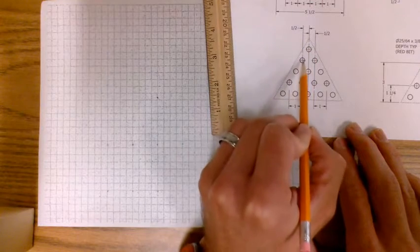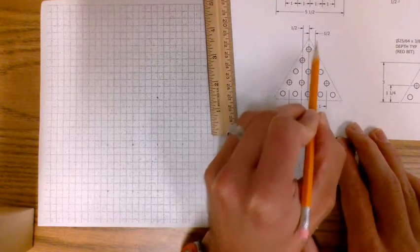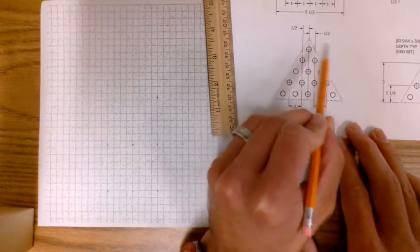You'll notice these holes that are lined up are half an inch off of that center mark, okay? Remember this whole triangle is symmetrical. So half an inch on either side.